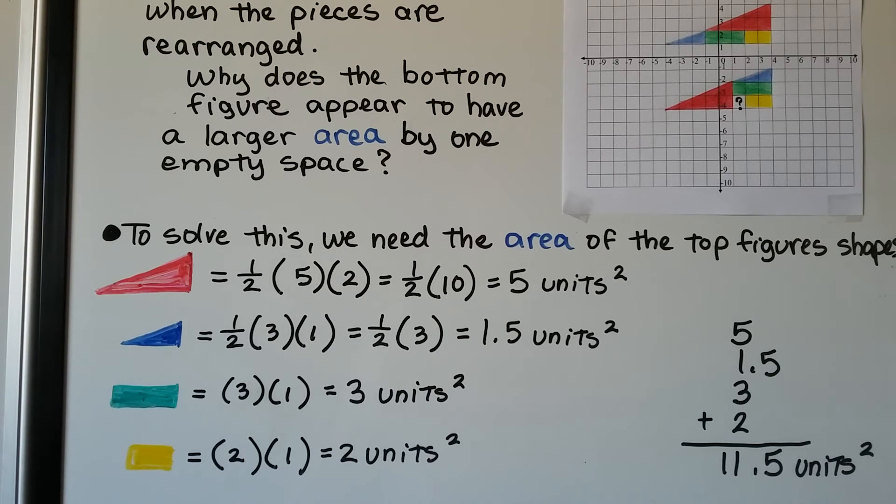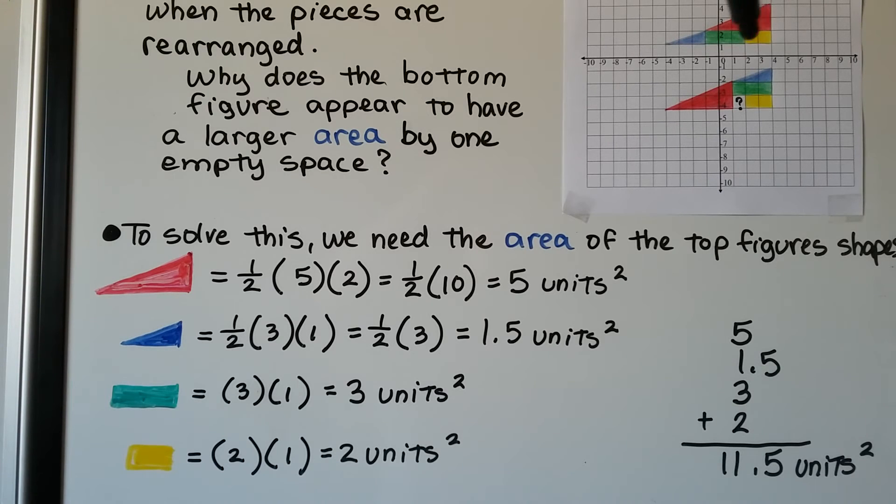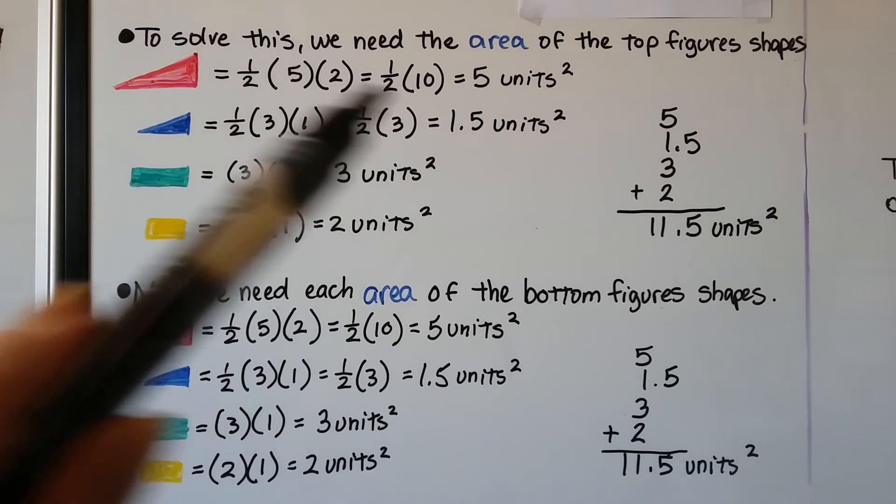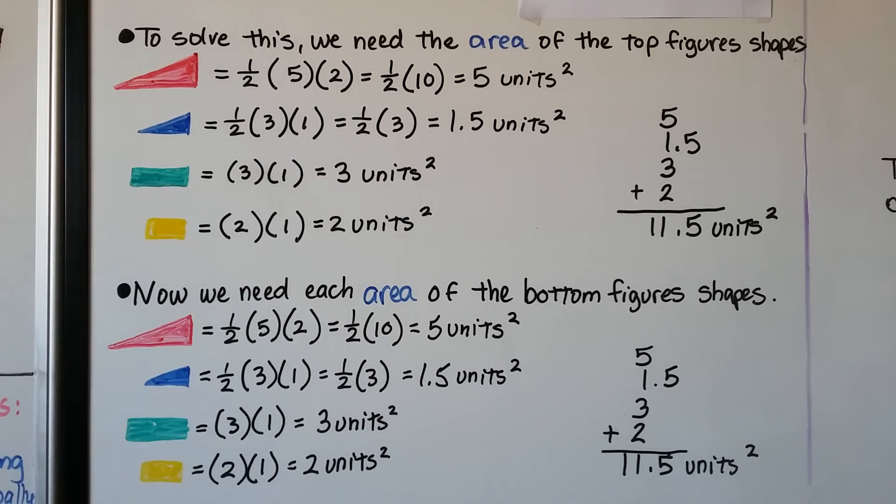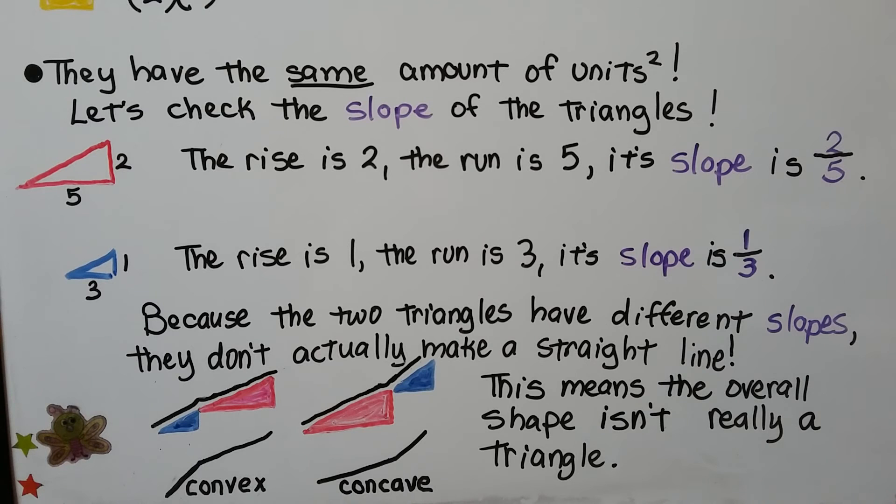To solve this, we need the area of the top figure's shapes. We need the area of each one of these shapes. The red one is going five units across and two units up. So, half times base times height, we get five units squared. For the blue one, it's going across three and up one, that's 1.5 units squared. The green one, we can just see it's one, two, three squares. It's three units squared. The yellow one is two units squared. We total them up and we get 11.5 units squared. But when we count the units for the bottom figure, we get five units squared for the red one, just like we did up here. We get 1.5 units squared for the blue one, just like we did here. Three units squared for the green one and two units squared for the yellow one. They have the exact same number of units squared. So, how could that one extra square be there, that white one? They have the same amount of units squared.